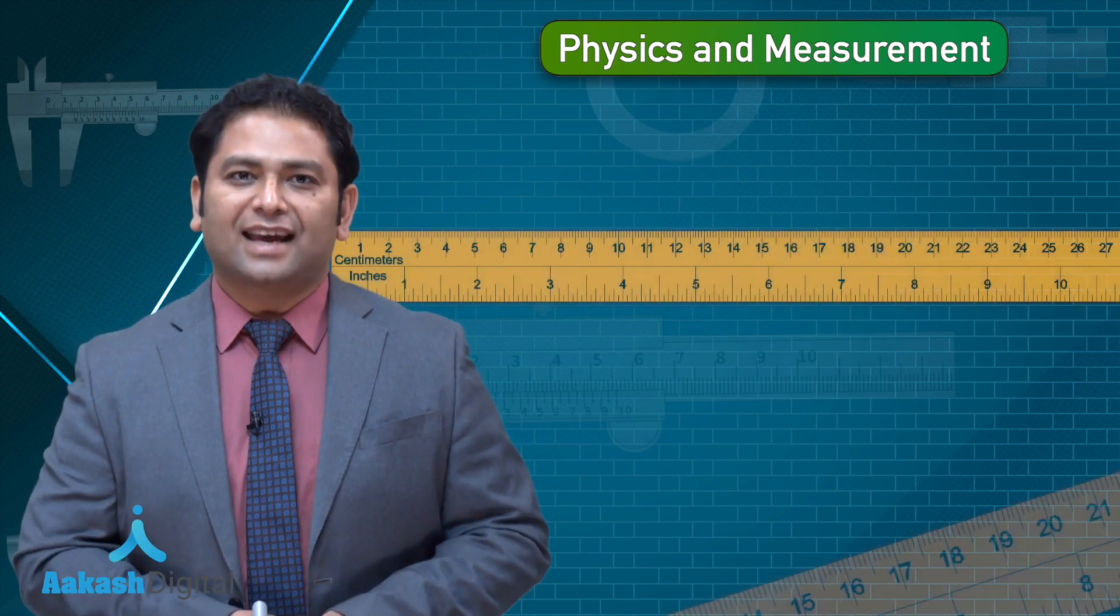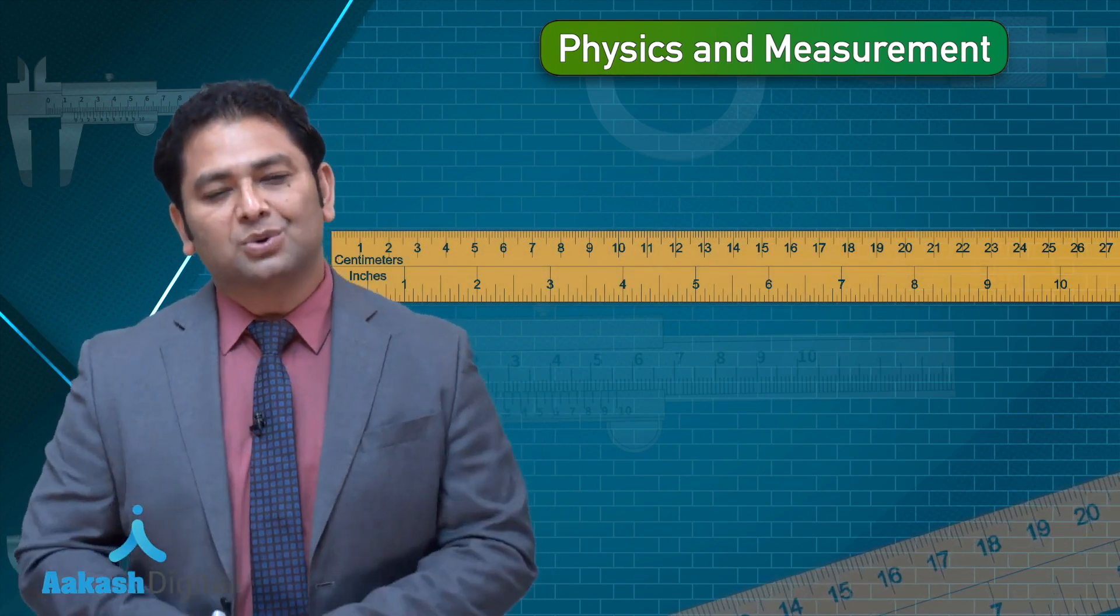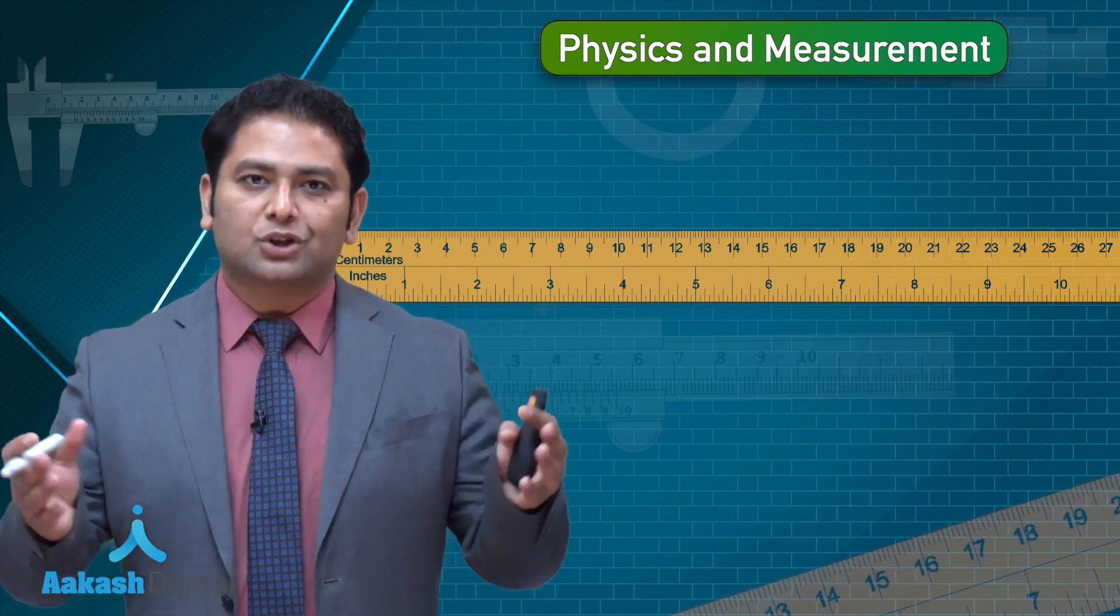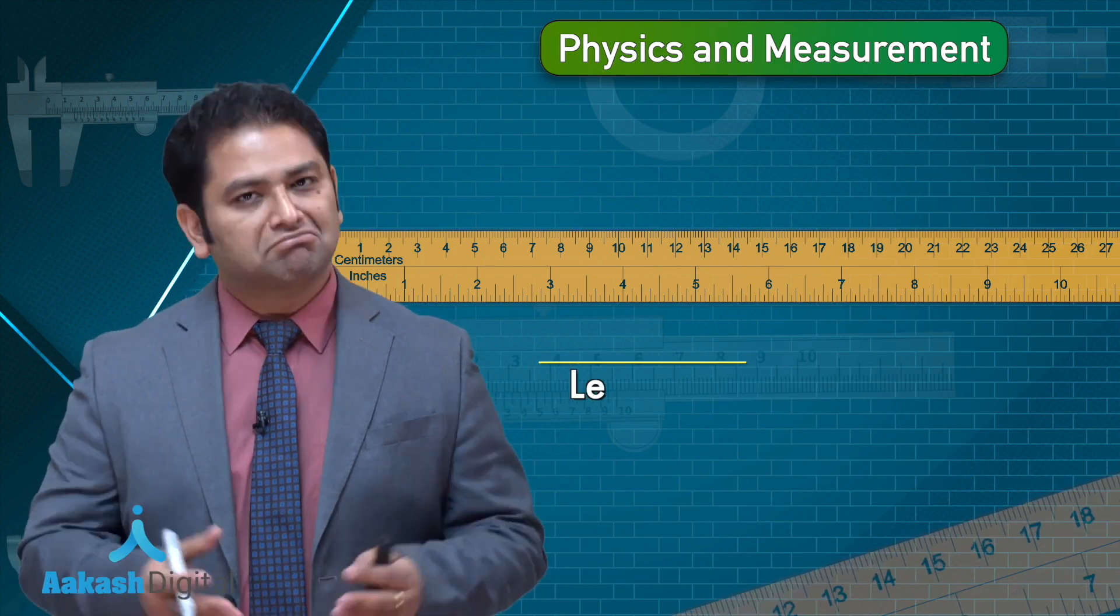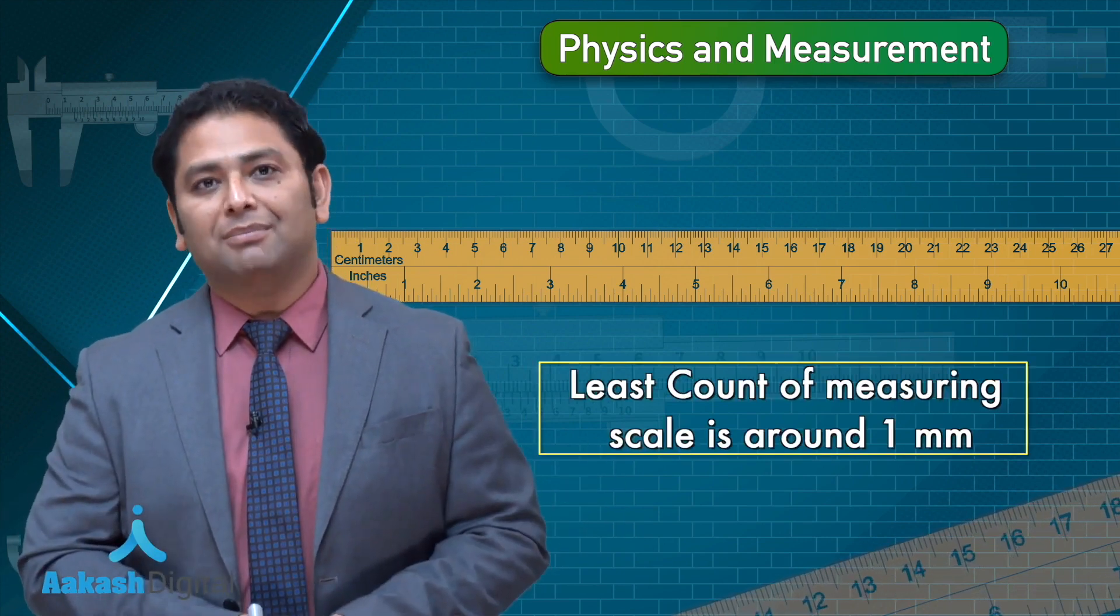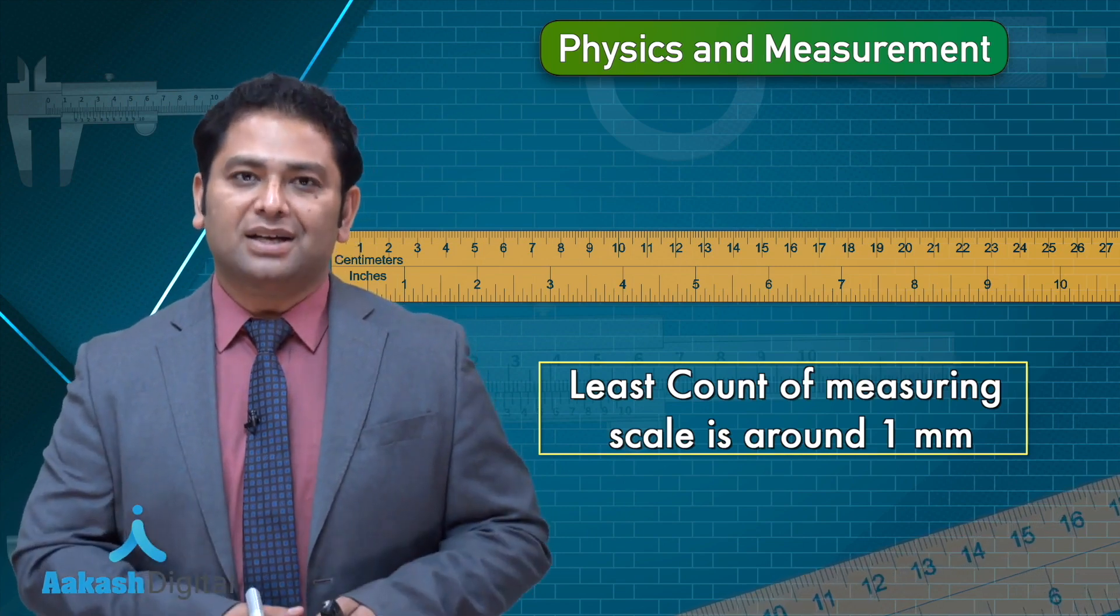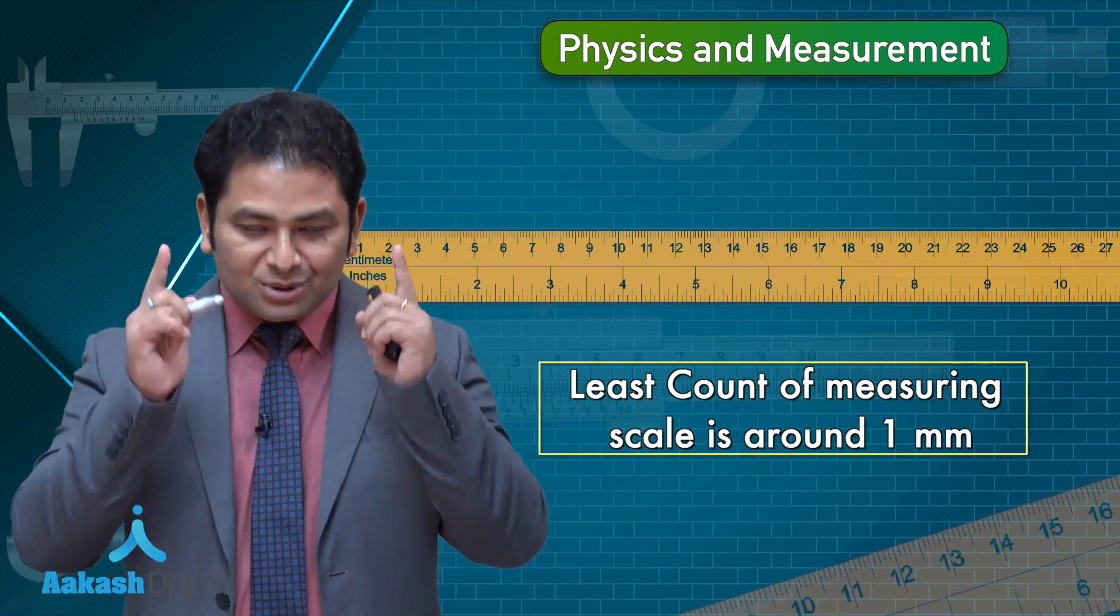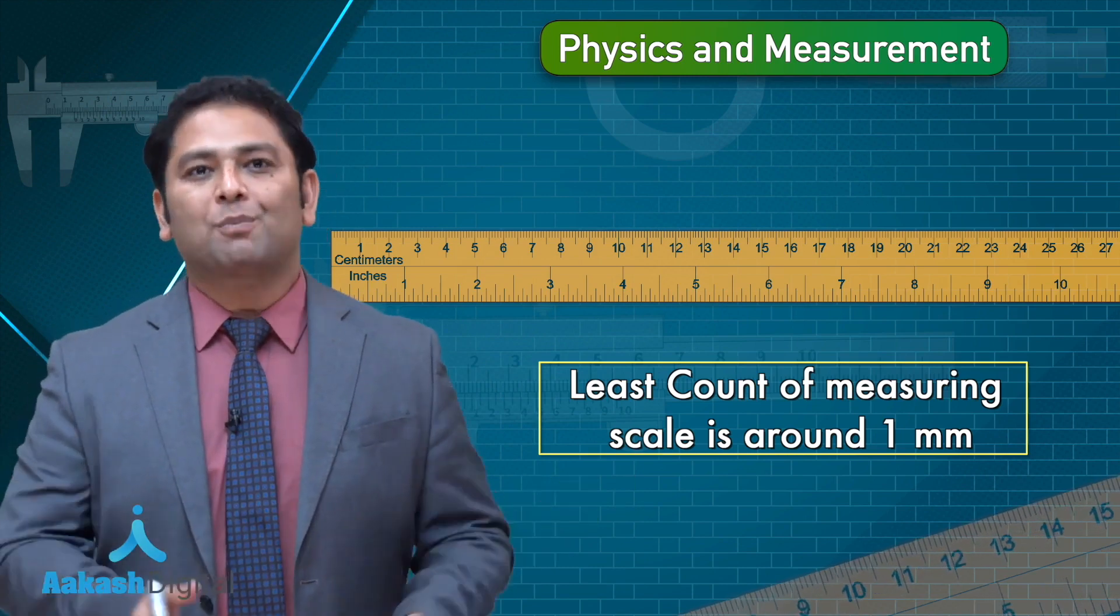If you take a typical measuring scale like a ruler that you generally use while doing measurement in your geometry classes, what could be the least count of that device? Somewhat around a millimeter. You can make the least count less than millimeter, but then you need to see it, and if your eye does not permit, there's no point reducing the least count.